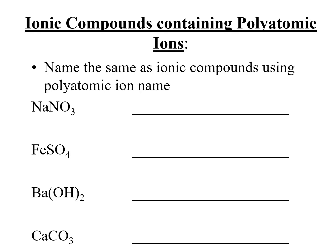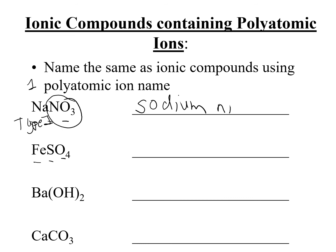If your ionic compound contains a polyatomic ion, name it following the other rules but recognize the polyatomic ion. 'Poly' means many — these compounds have three elements. For NaNO₃: Na is in column 1, so it always forms a plus 1 charge — it's type 1. Just write the name sodium. NO₃ is a polyatomic ion you had to memorize — it's nitrate. So we have sodium nitrate.